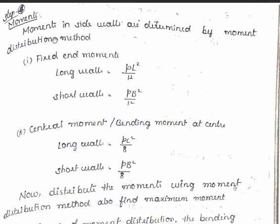Next step, we have to calculate the moments. Moments inside walls are determined by moment distribution method. So we have to apply this method in order to find out the maximum moment. In that, first fixed end moments for long walls is this much, short walls is this much. We know wl²/12 while analyzing fixed beams, right? So this is for long walls Pl²/12, for short walls Pb²/12, where P is the intensity of water pressure, L is the long wall length, B is the short wall length or tank width.